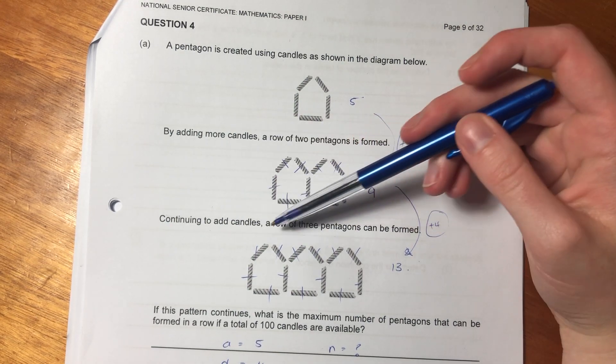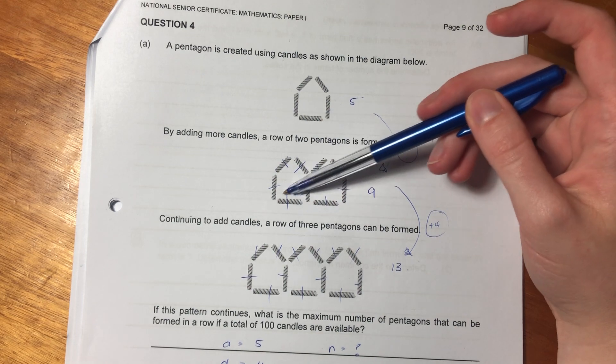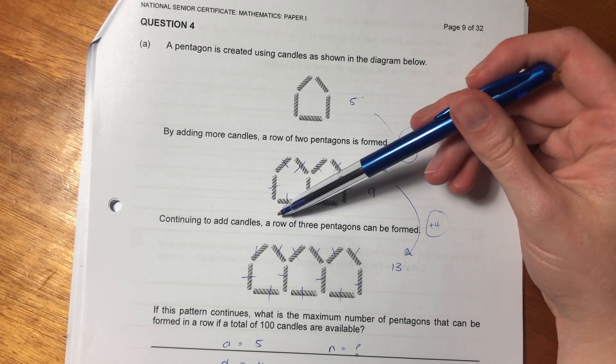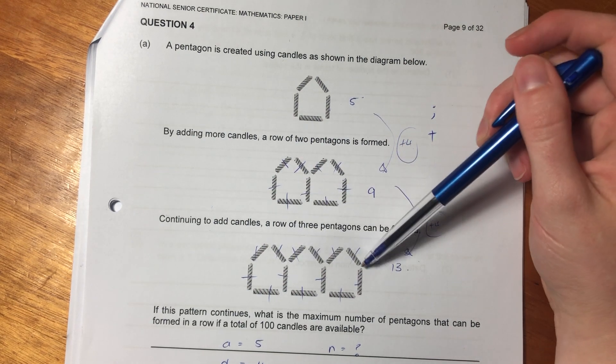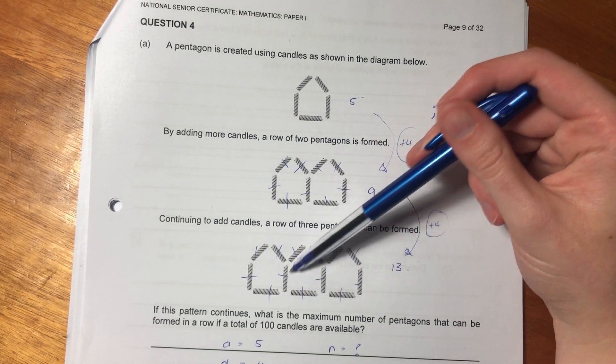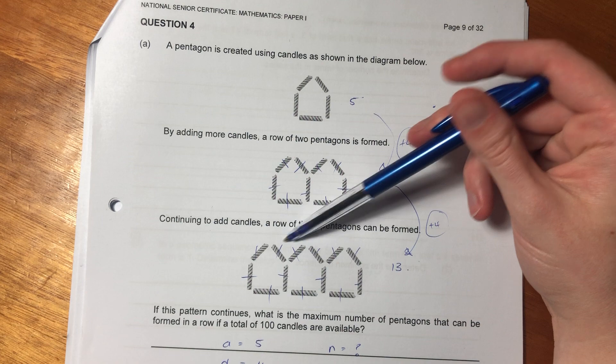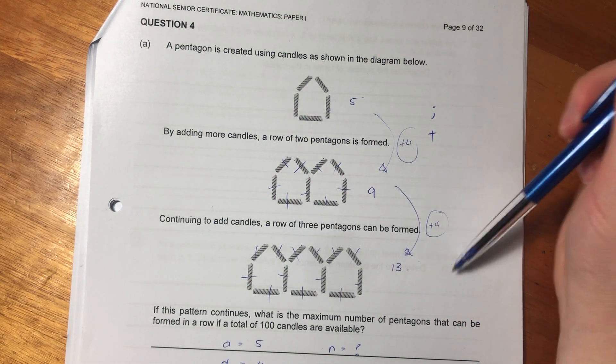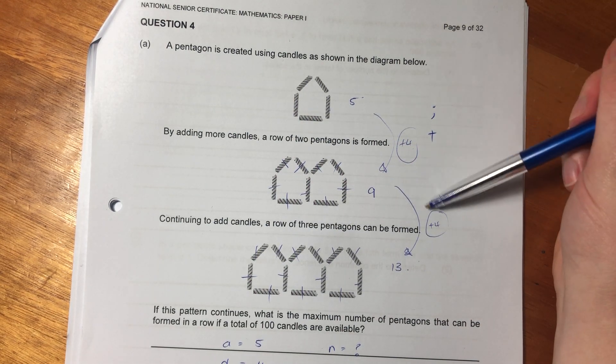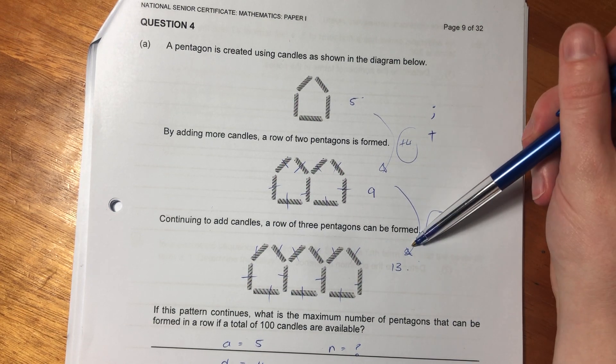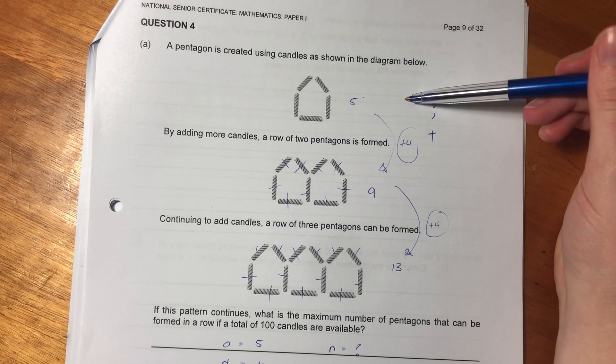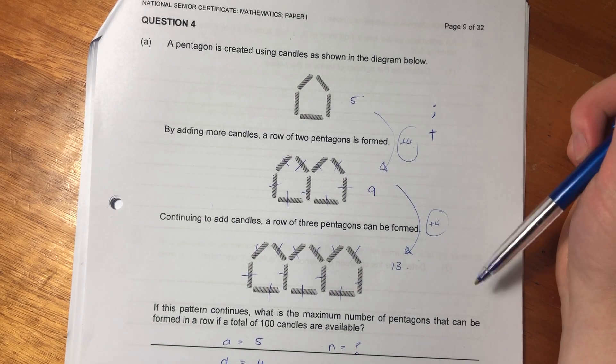Then they said continuing to add candles, these sort of broken birthday candles it looks like, a row of three pentagons can be formed. I've counted the number of different candles that we have in here, and there's 13. So notably, we see that it's increasing by four with each term. So what you should automatically be thinking is you should be thinking arithmetic.